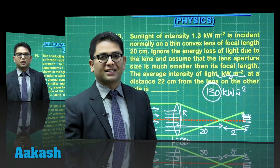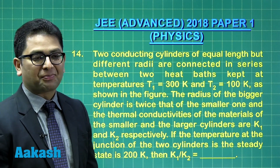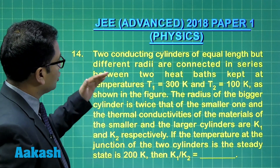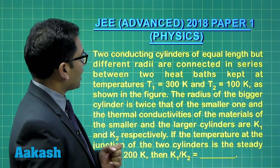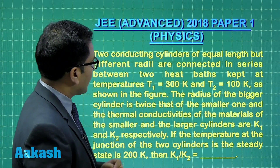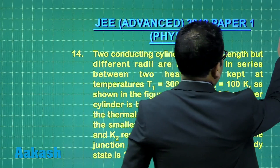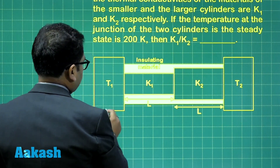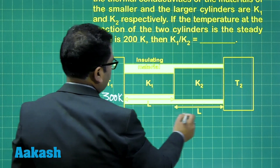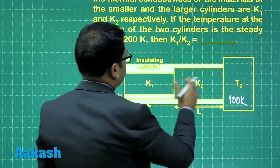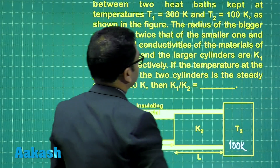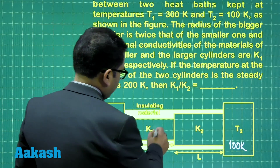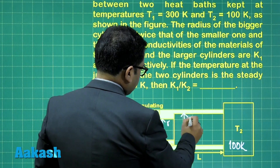Now let's move to question number 14 — the final question of this section, from the topic of heat transfer and conduction. Two conducting cylinders of equal length but different radii are connected in series between two heat baths kept at 300 and 100 kelvin. So this is 300 kelvin and this is 100 kelvin, the two heat baths. The radius of the bigger cylinder is twice that of the smaller one — if this radius is r, then this radius is 2r.